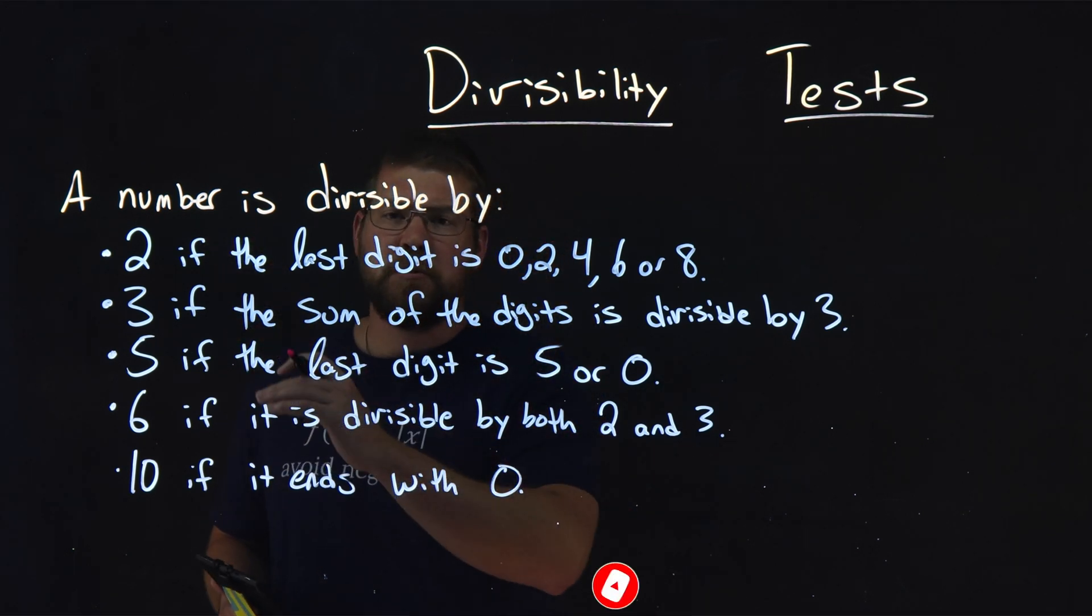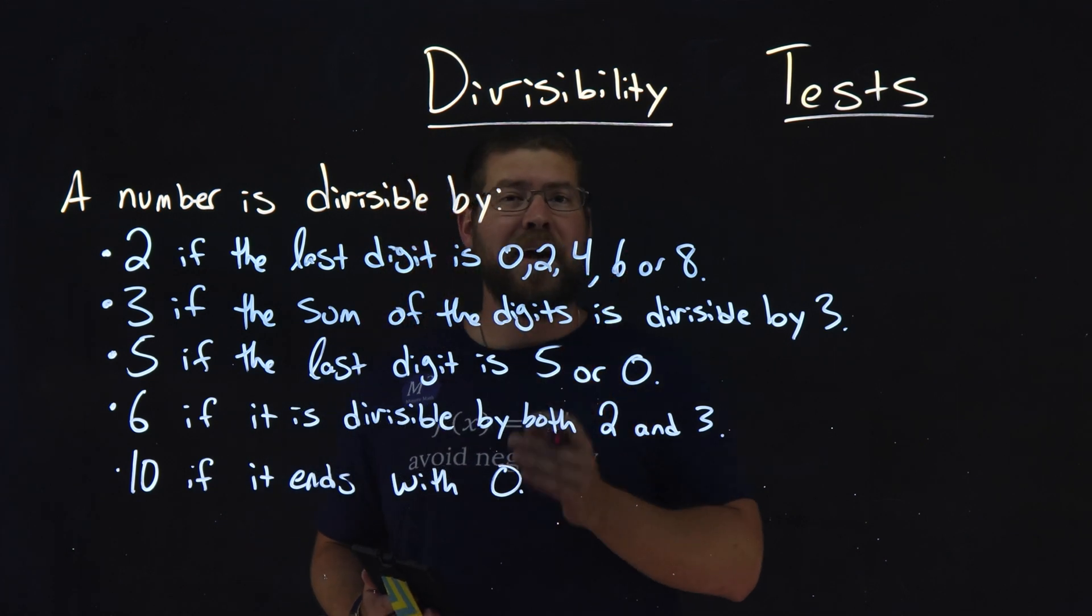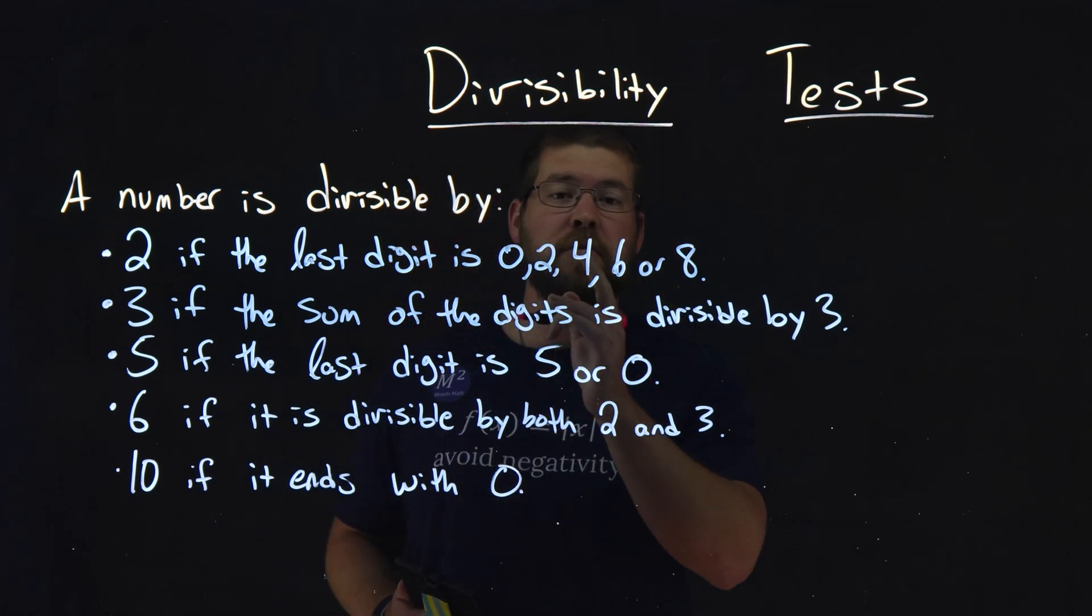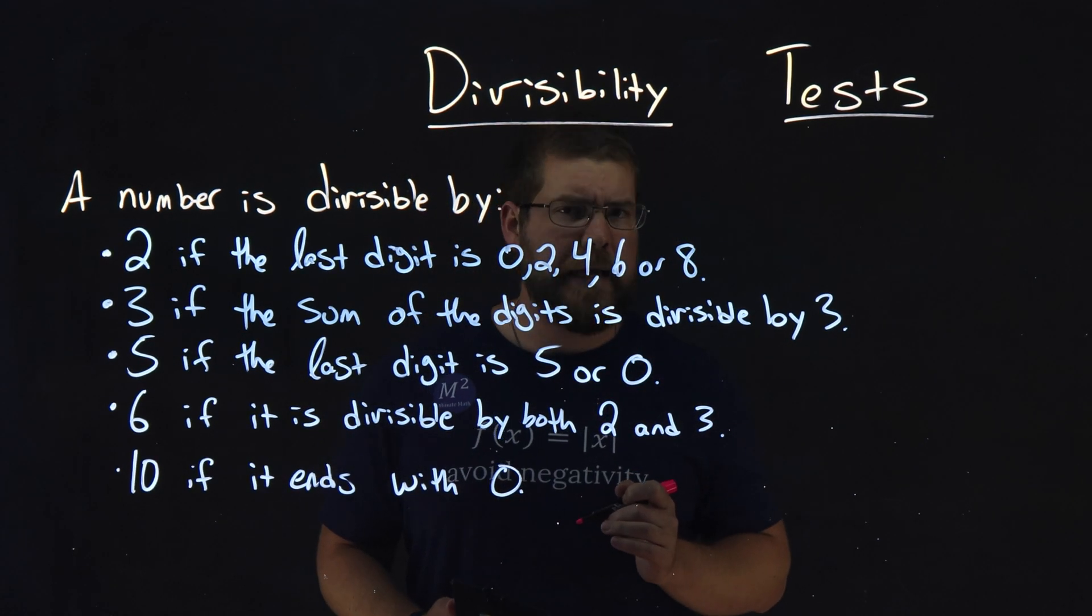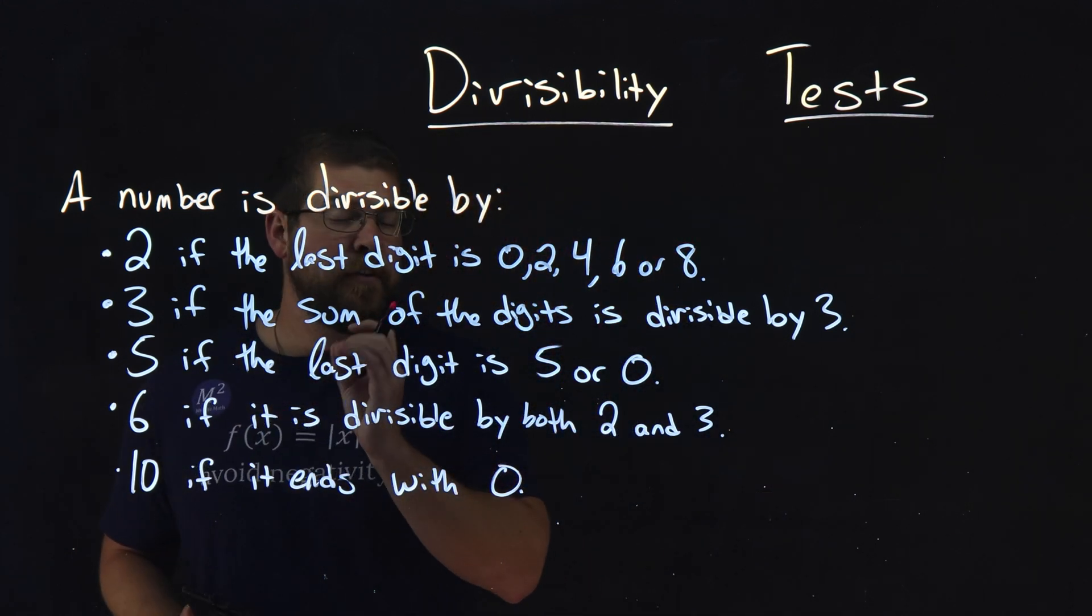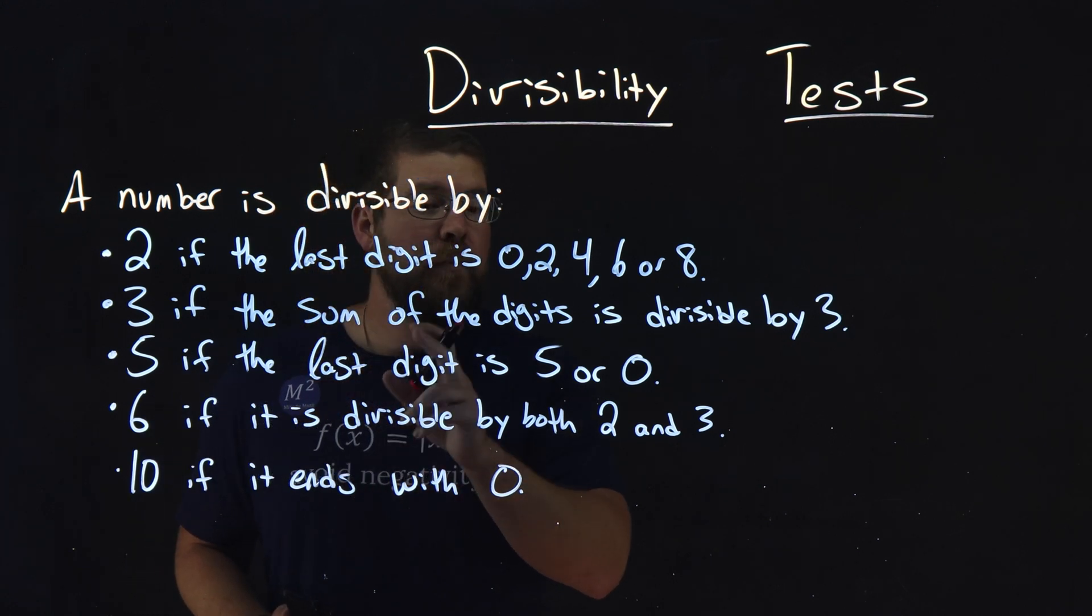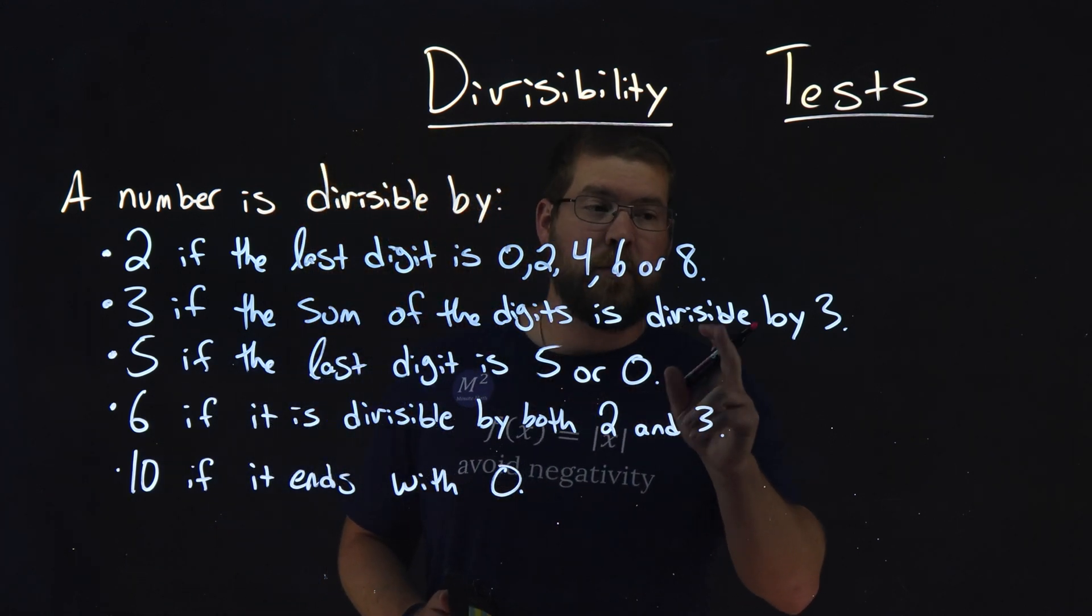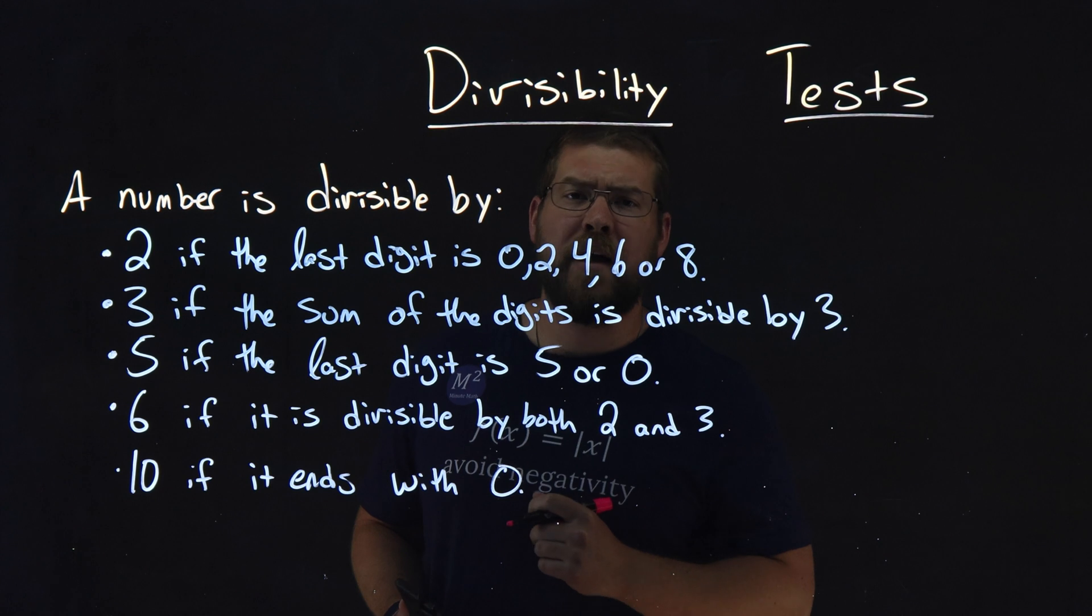The first one is 2. If a number is divisible by 2, that number must end in 0, 2, 4, 6, or 8. Pretty simple. 3. Now, this one's a little trickier. A number is divisible by 3 if the sum of the digits is divisible by 3. And we'll see an example of that in a minute.